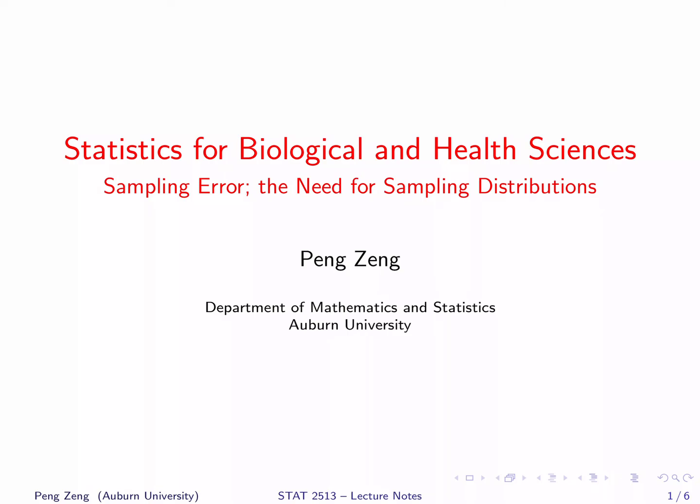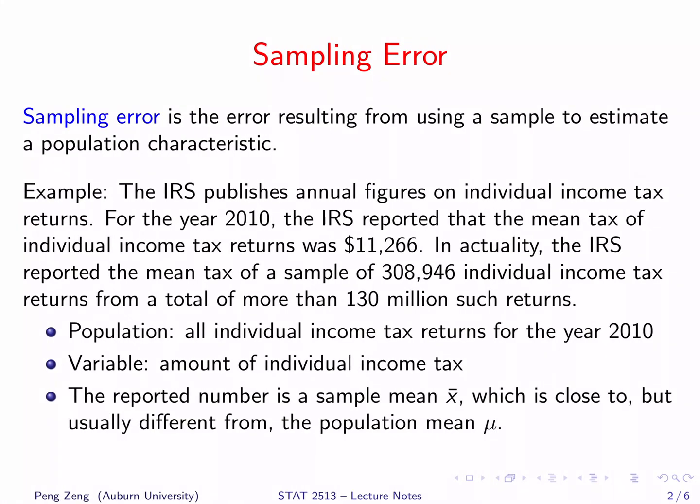This lecture introduces the concept of sampling distribution. Recall that the main purpose of statistics is to infer the population based on a sample. Because a sample is only a portion of the whole population, it is expected that there exists some difference between a sample quantity and the corresponding population characteristic. The error resulting from using a sample to estimate a population characteristic is called sampling error.